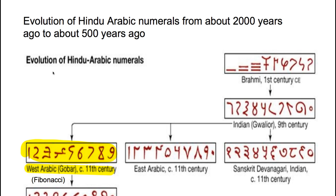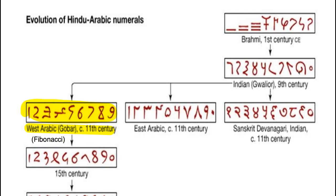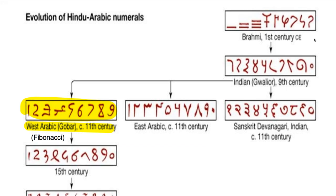Here is some evolution of these Hindu-Arabic numbers from about 2,000 years ago to about 500 years ago. This is India — this is Brahmi, the first century of the common era. In the period right after the birth of Christ in India, the numbers that eventually became our numbers looked very different than our current ones. This 800-year period from the 1st century to the 9th century was really important in the history of mathematics because this is where the Indian mathematicians began to use the number zero — the concept of zero as an actual number. You can see the symbol show up by the 9th century in India.